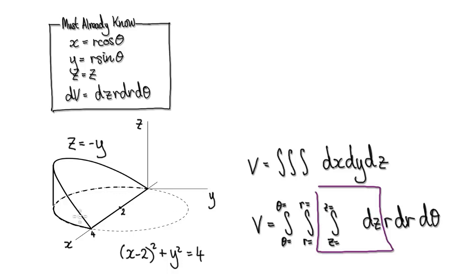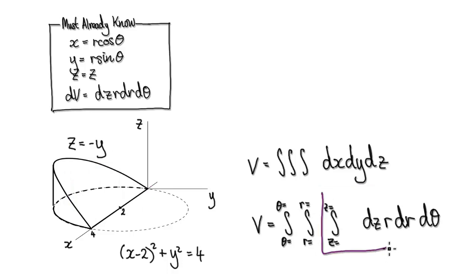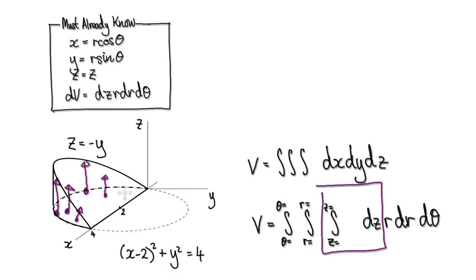Looking at the inner integral, you're working in the z direction — moving along in the z direction. You start at a z level of zero and then you stop when you hit the plane. So you start at an elevation of zero, move up, and then you stop when you hit this plane here.